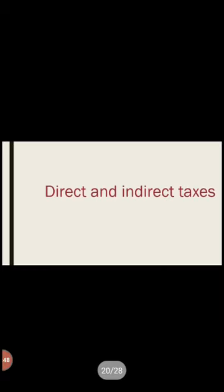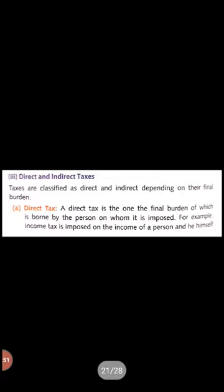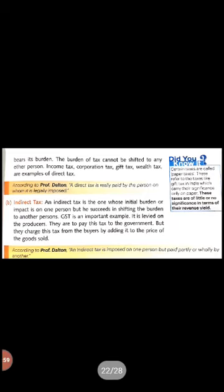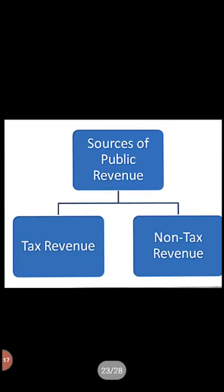Direct taxes are those whose burden falls on the person on whom they are imposed — for example, income tax. Indirect taxes are those whose burden can be shifted from one person to another — for example, GST. The government imposes GST on the producer, but ultimately the consumer pays it. This completes our study of tax receipts under revenue receipts.